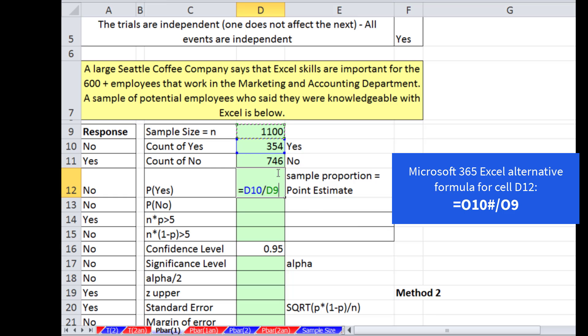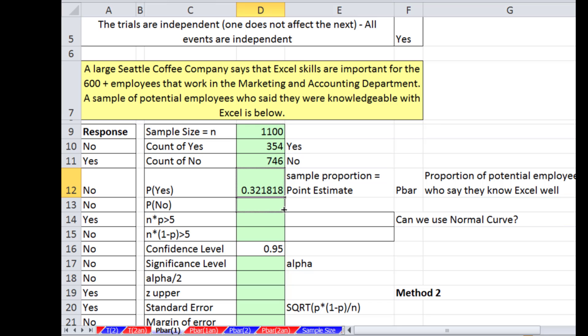Now for the probability, we have our total number in the sample and our number of successes. We'll do equals the number of people that responded yes divided by the sample size. I'm going to lock this with F4 so I can copy it down. The blue box is on the yes; when I copy it down, the blue box will move down to no. So 32% of these people have the potential of getting an interview. That's the sample proportion, our point estimate. It's the best estimate we have of our population parameter - the proportion of potential employees who say they know Excel well.